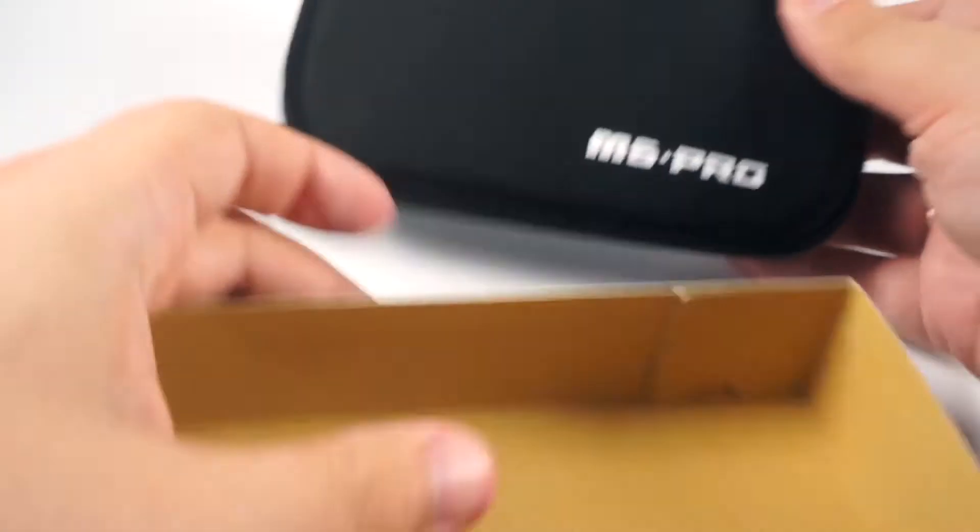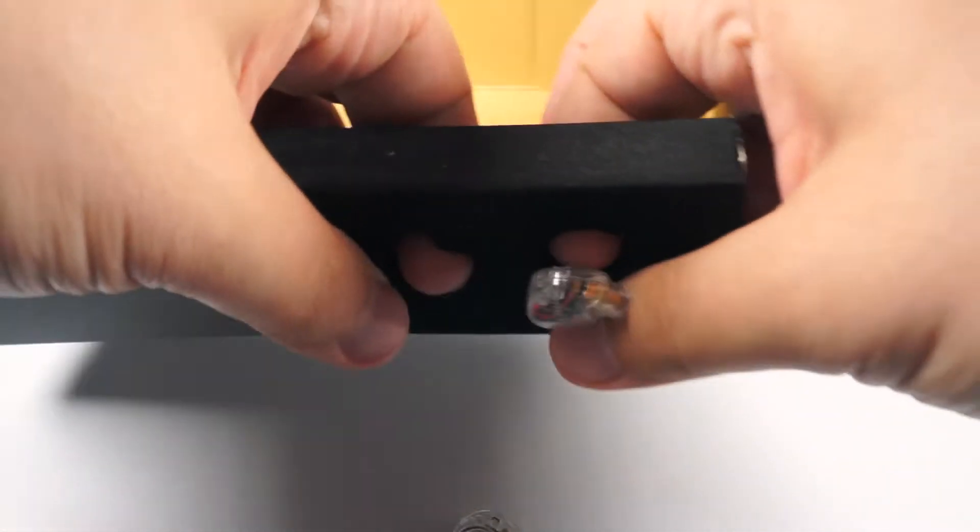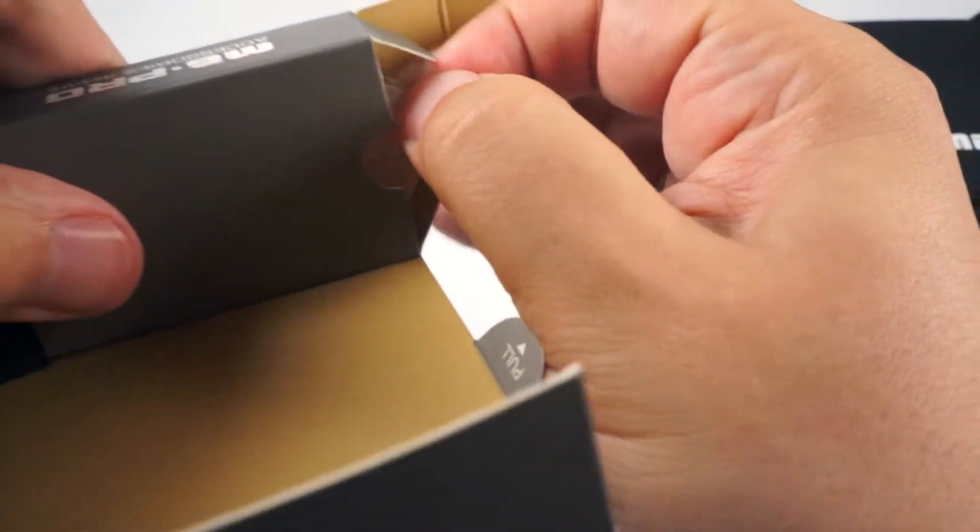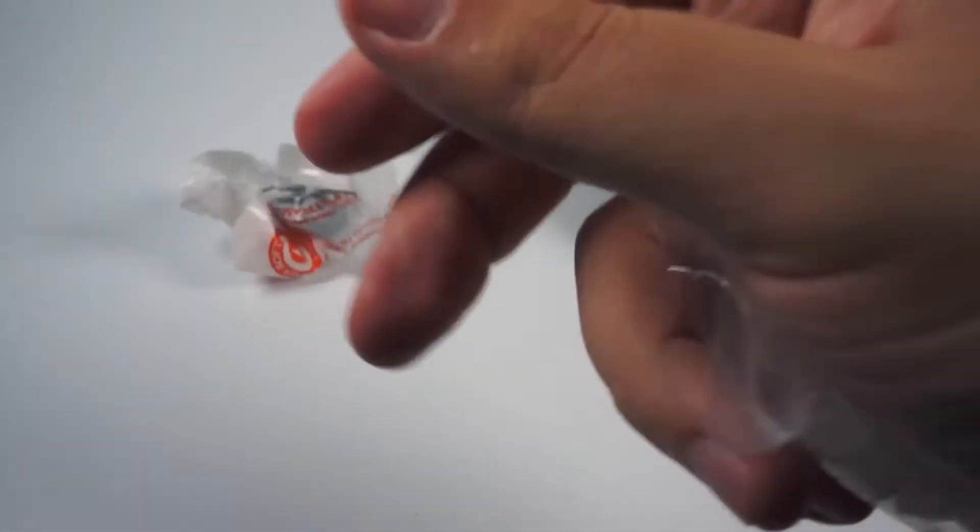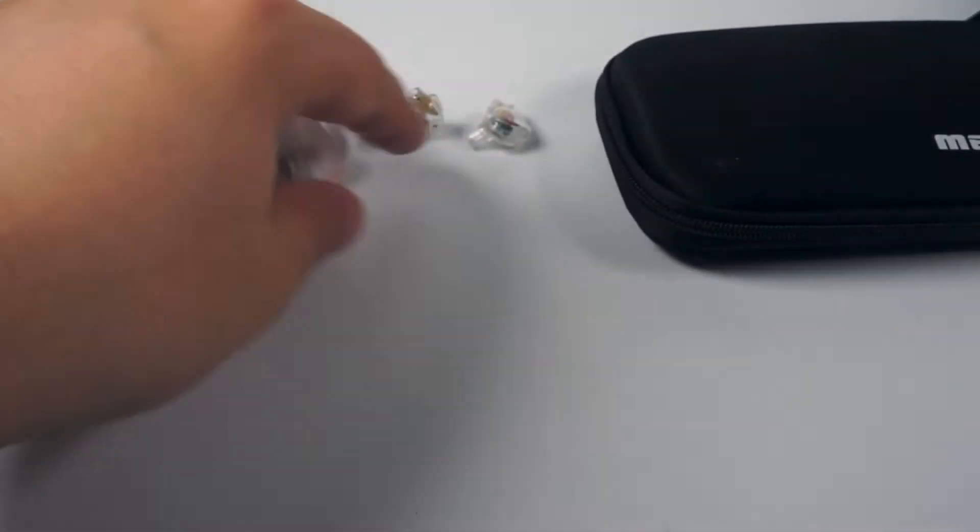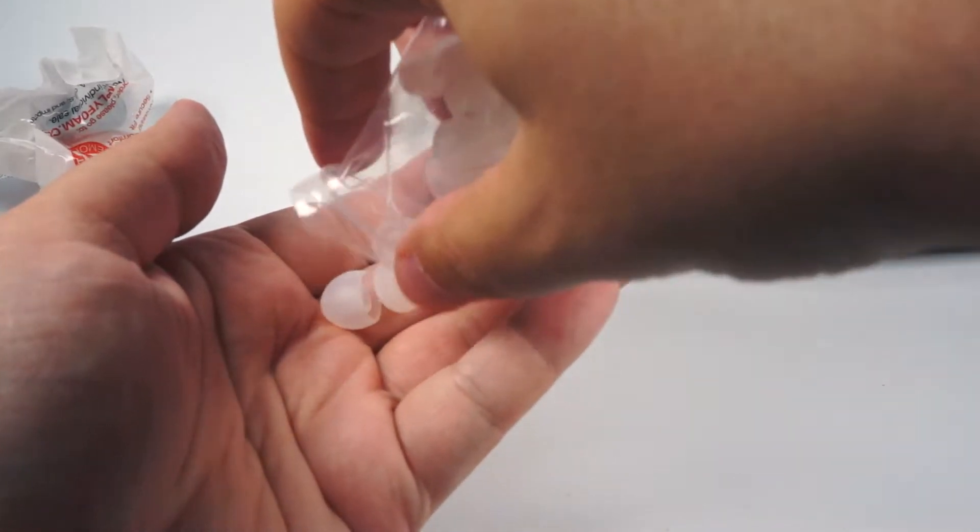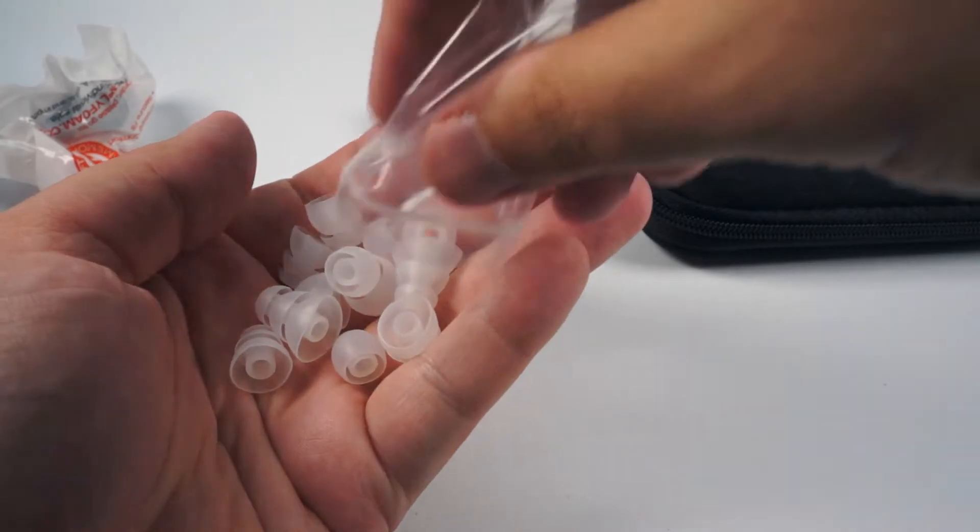So big case. I will return to this case later. Here are the phones themselves, pretty small. And here are sets of tips. You will have a pair of comply foams and a big set of white silicone tips. Really big set.